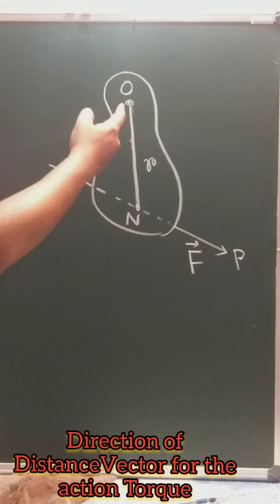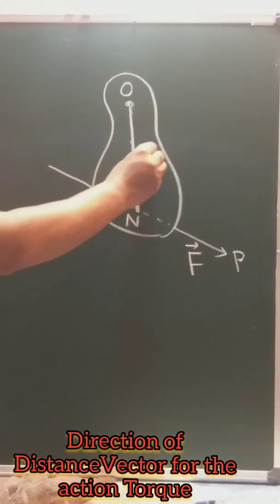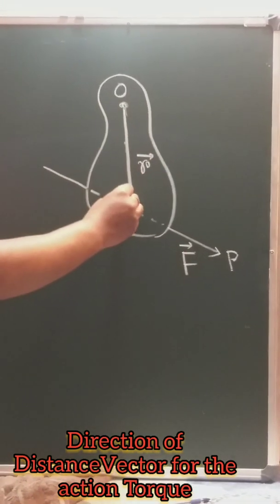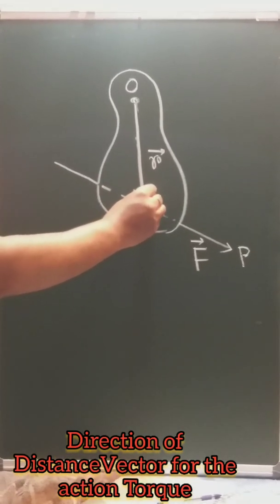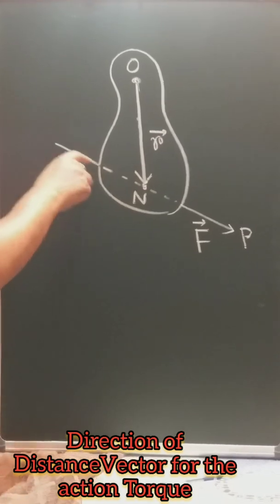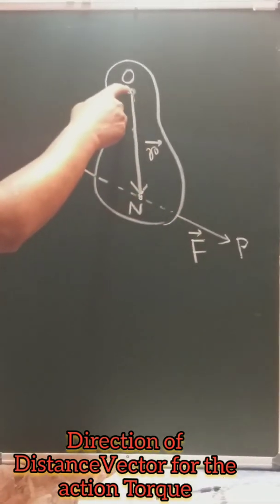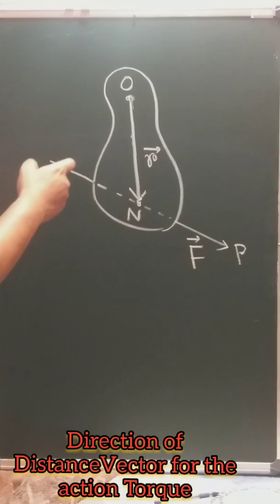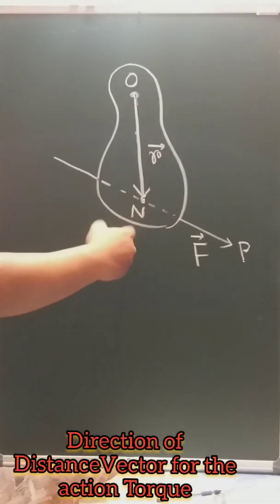We can denote the direction of this distance vector R from O to N. We give this arrow sign to denote the direction of this distance vector of the line of action of force from this axis of rotation or fixed point, and due to application of this force in this way,